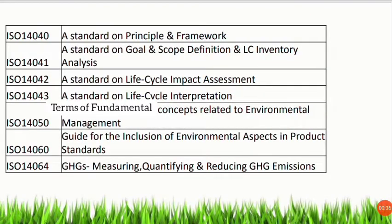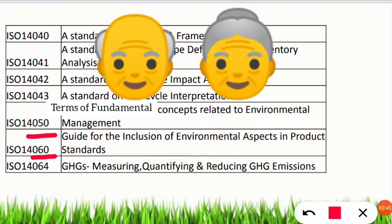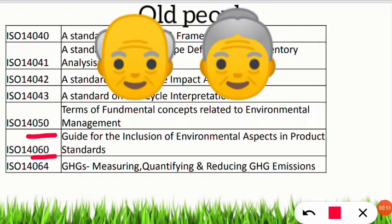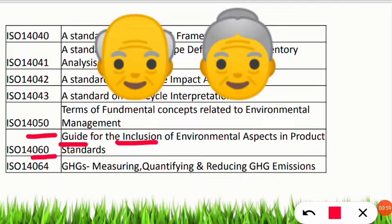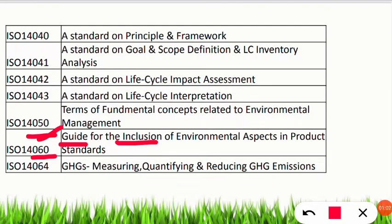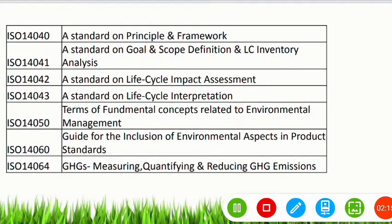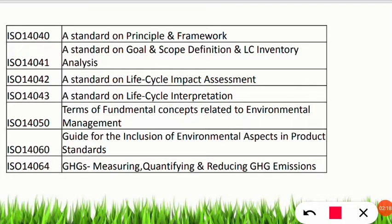ISO 14060: after 60 years of age, people become senior citizens. Many are excluded and not taken care of, but we have to include and guide them because of the environmental aspects in product standards. So remember: include those 60-plus-age people and guide them — that's why ISO 14060 is about environmental aspects in product standards.